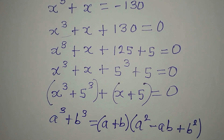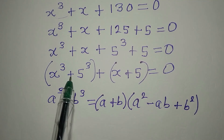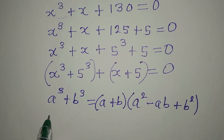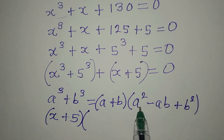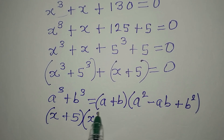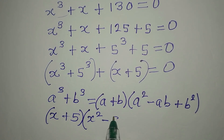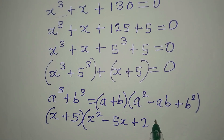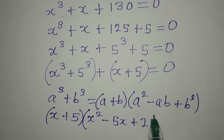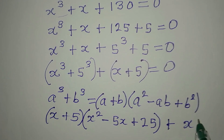So this is what this means. Now in place of this I'm going to express this in that form. So a plus b is now x plus 5, times a squared — that would be x squared — minus ab, that would be x times 5, which is 5x, then plus b squared, that would be 5 squared, which is 25.